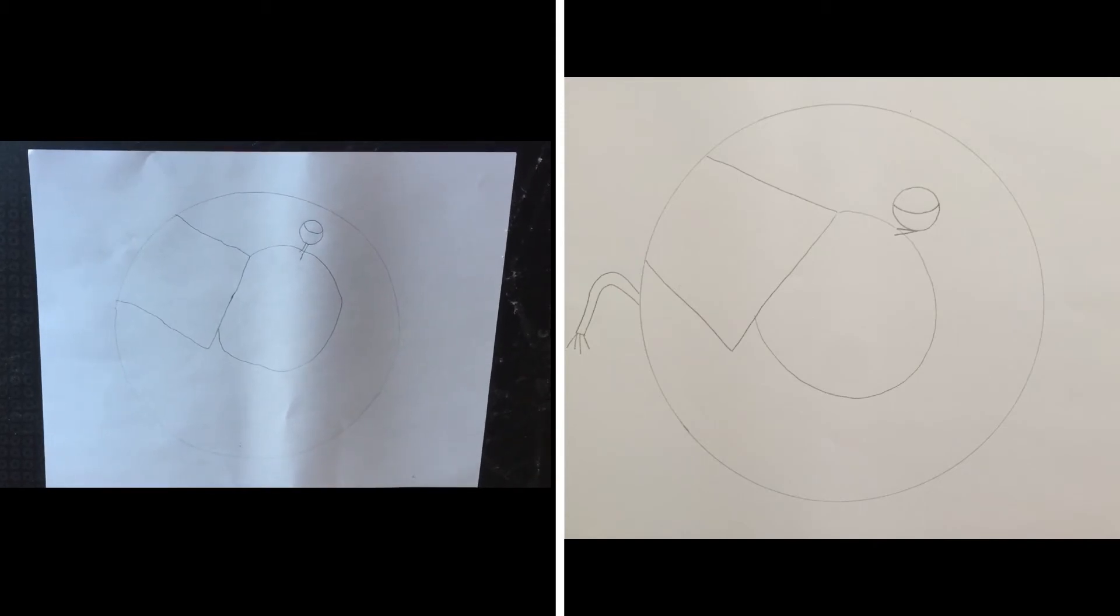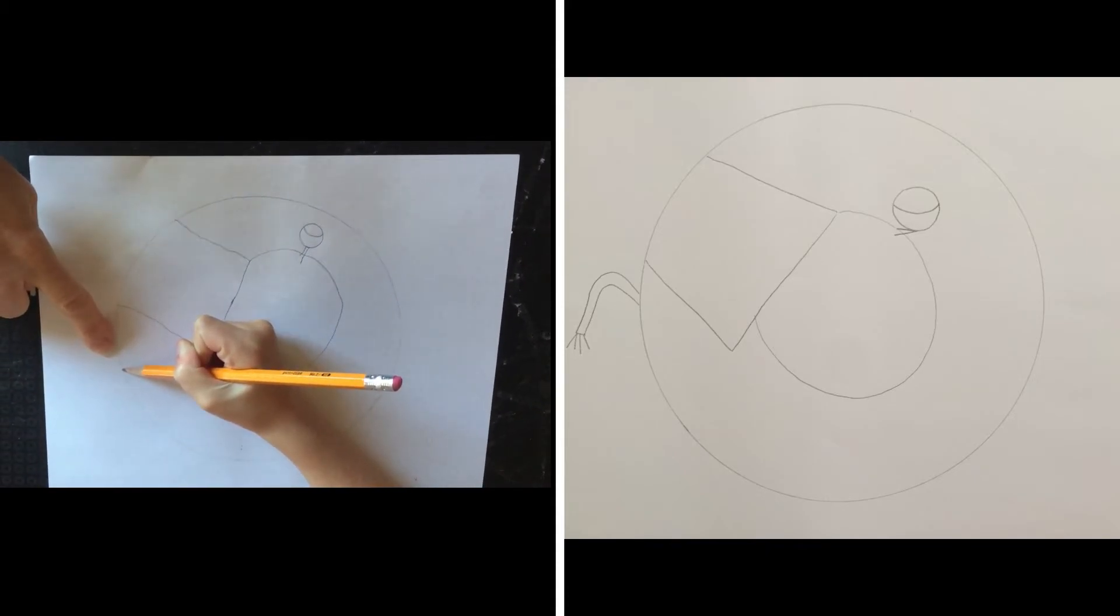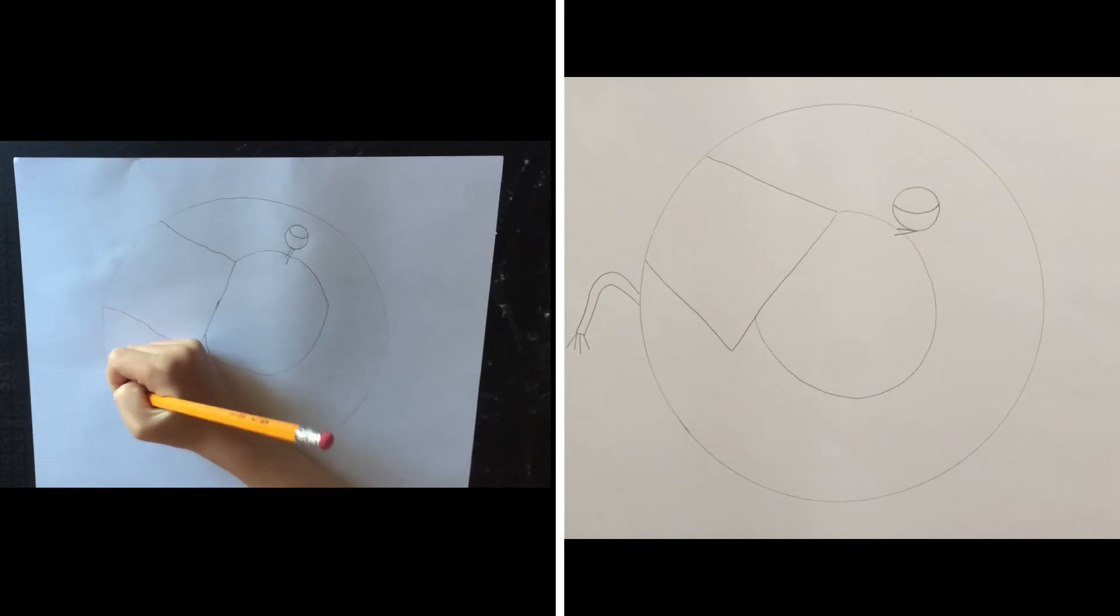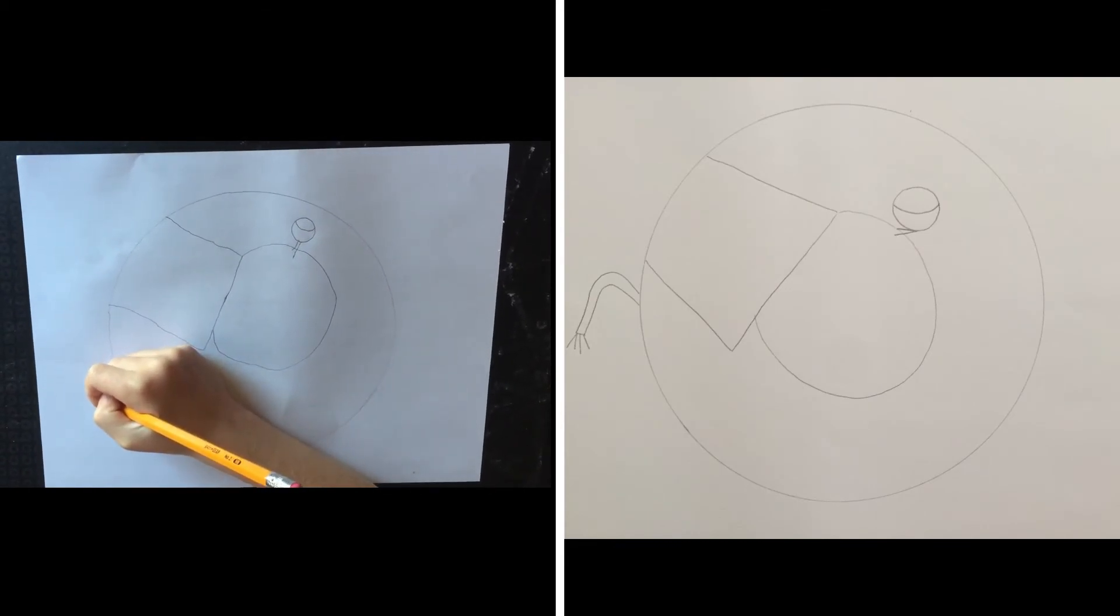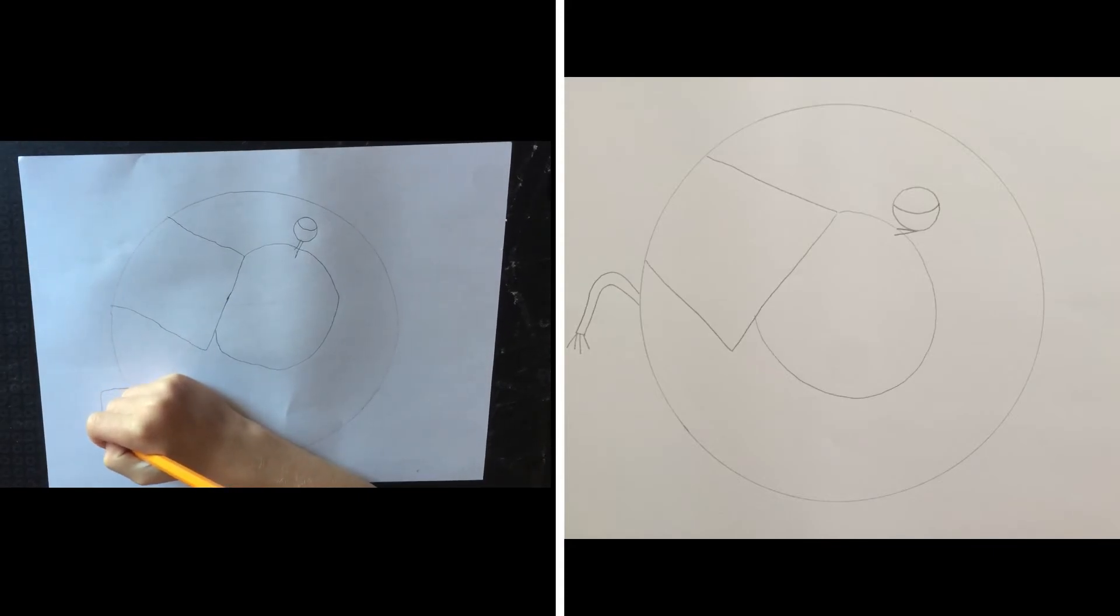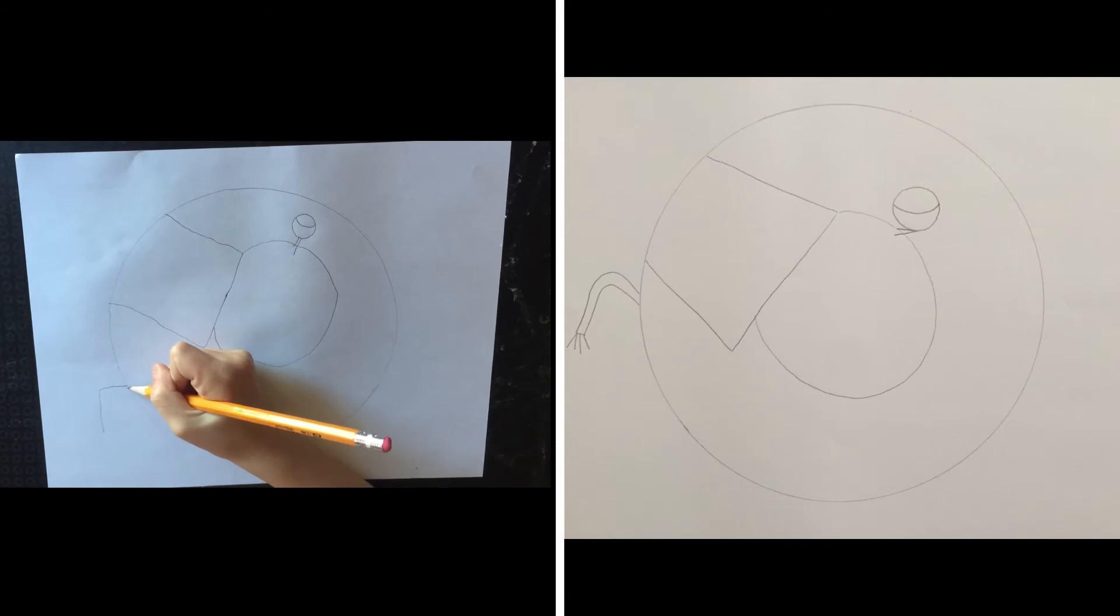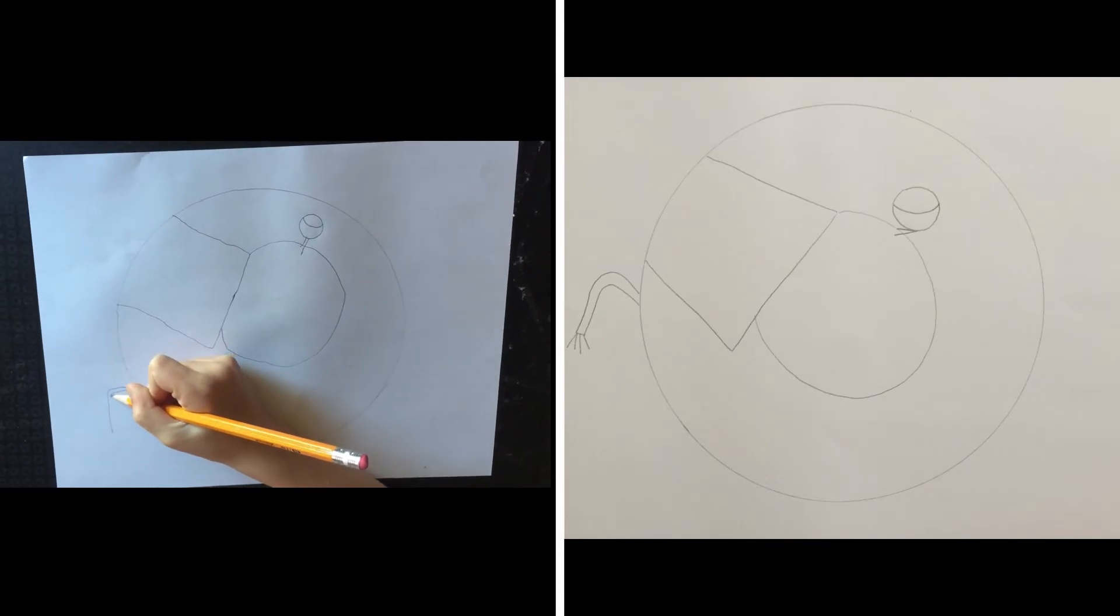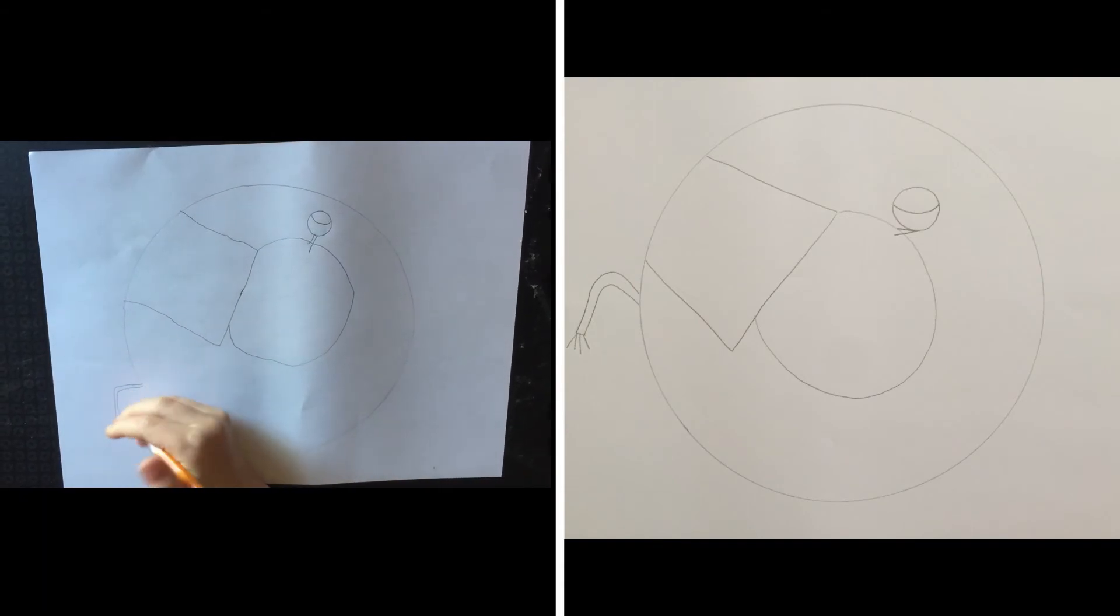Mr. Elephant needs a tail. So on the same side as his ear, on the outside of the circle, we're going to make like a curved seven. Do you know how to make the number seven? And you can go back and double the line so it makes it thicker. And we can put some few hairs at the bottom of his tail.